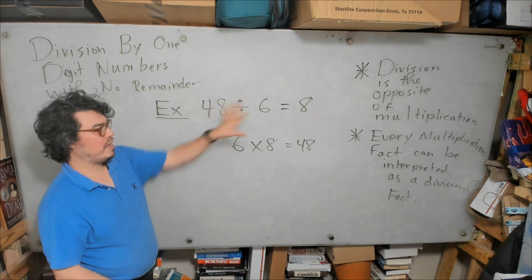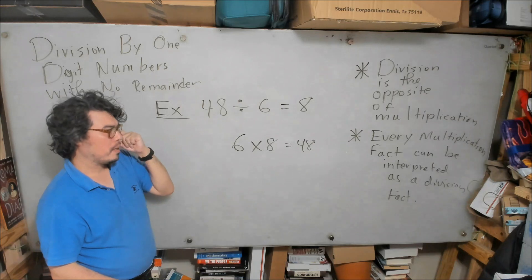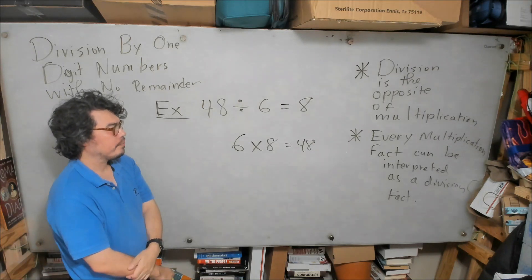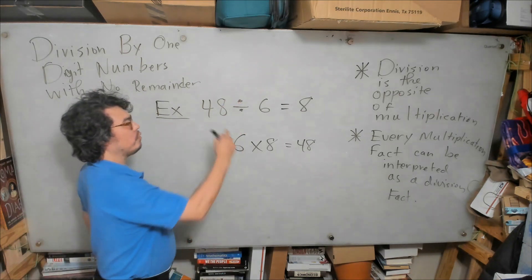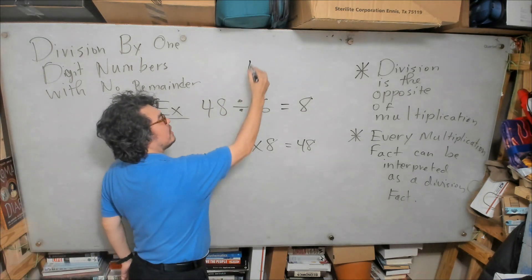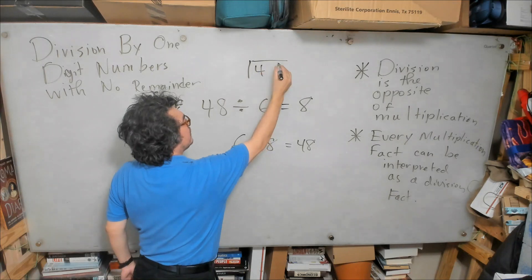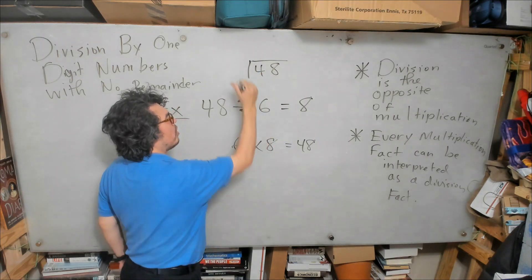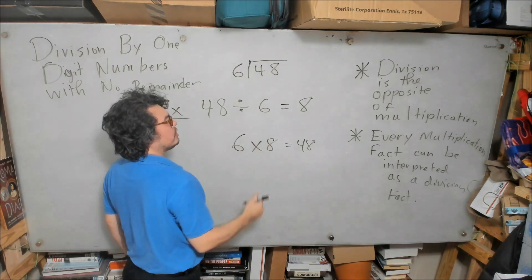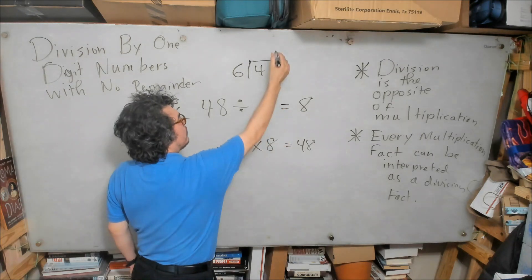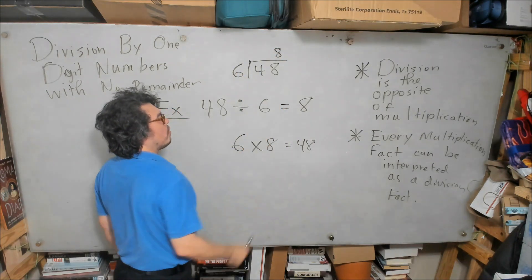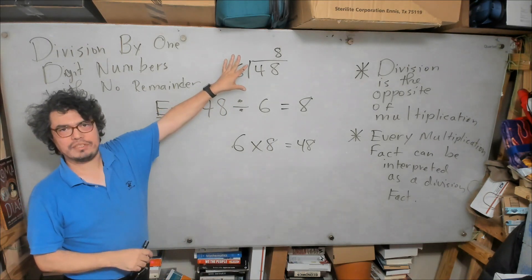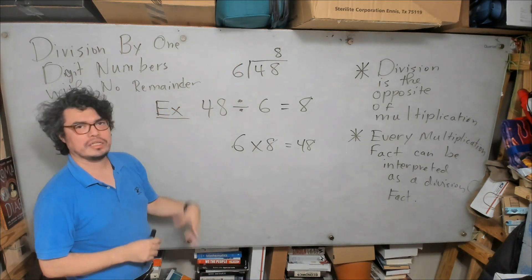Using the other notation, we would express this fact as follows: we would put this number on the inside of our long division house like this, we would put this number on the outside, and we would place this number here because 8 times 6 is 48. We're going to look at the mechanics of this notation later where it's going to play a significant role for us.